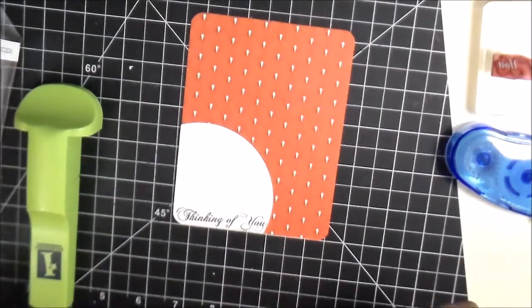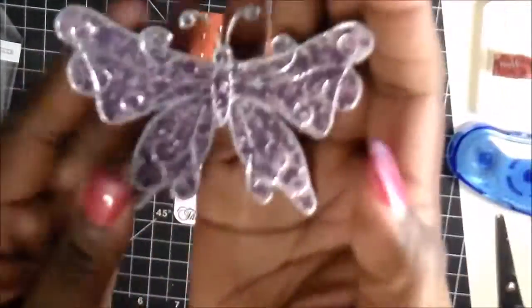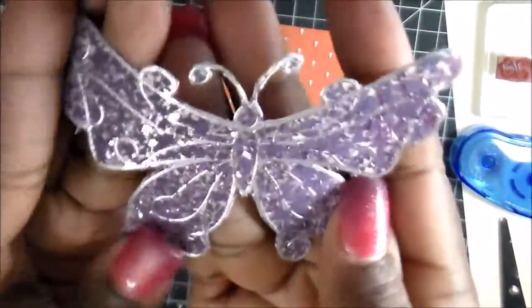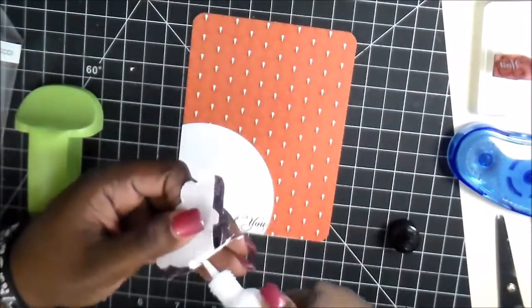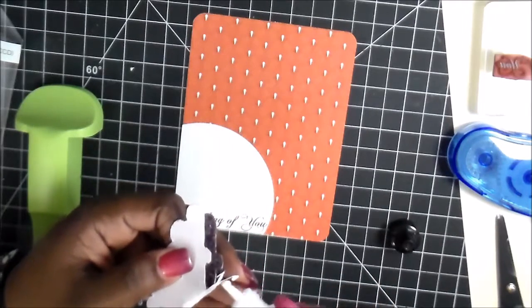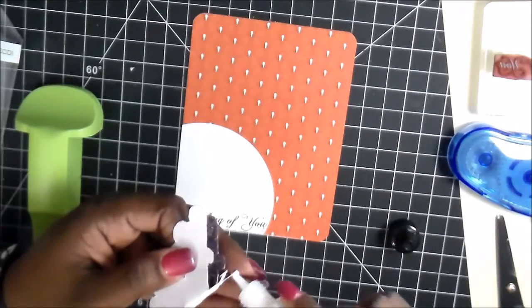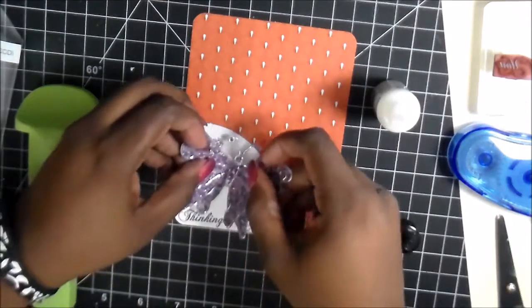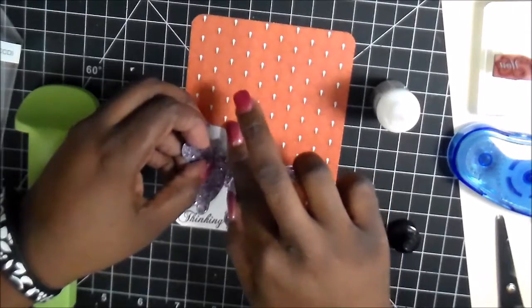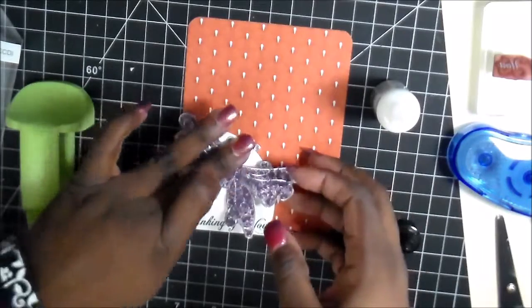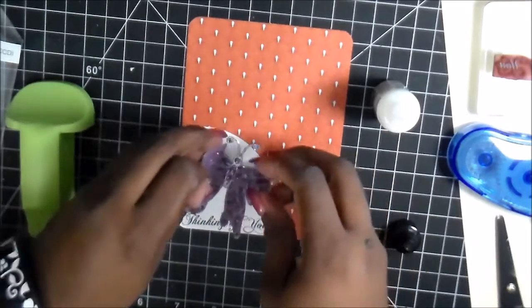Now, with this butterfly that I'm going to use, I decided to just use, what is that, multi-medium, multi-mat medium by Ranger. Just gluing down in the center and on the antenna. And that's what I'm going to use to glue them down.